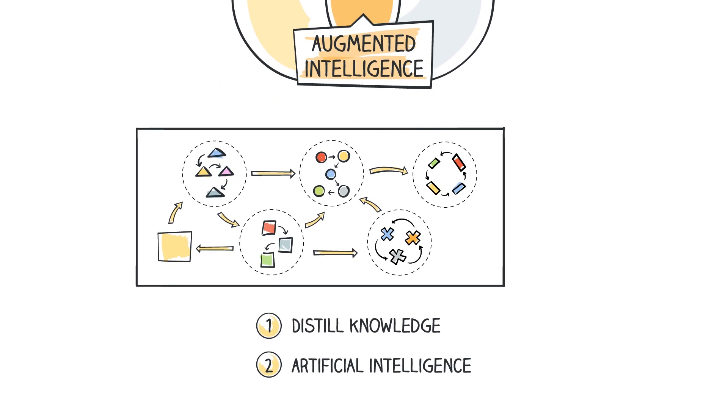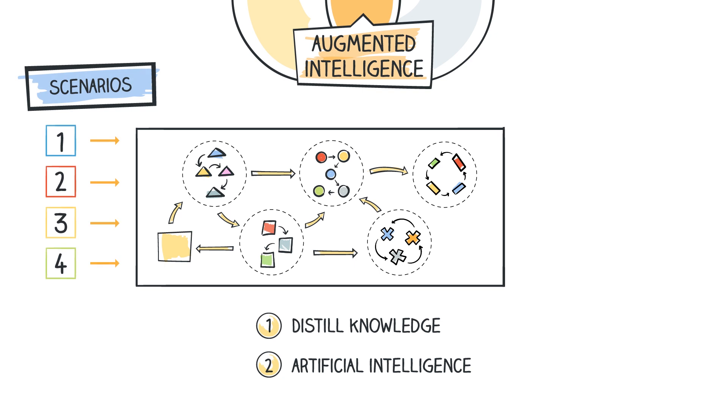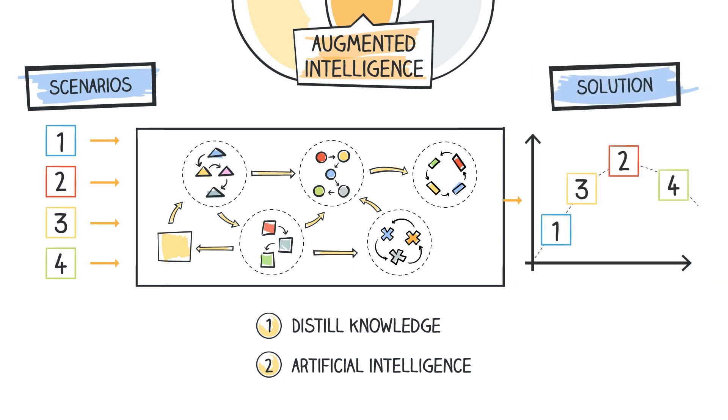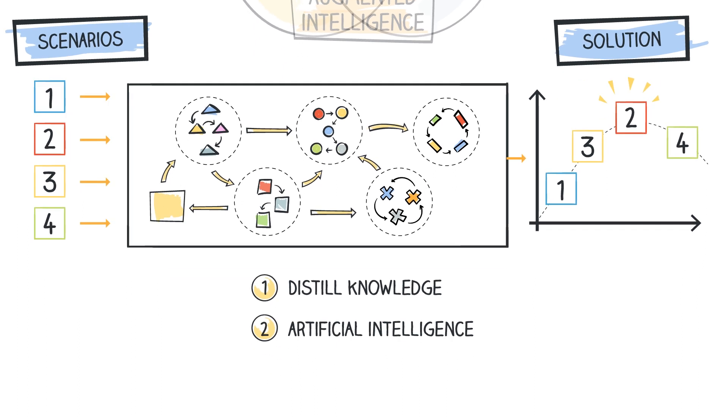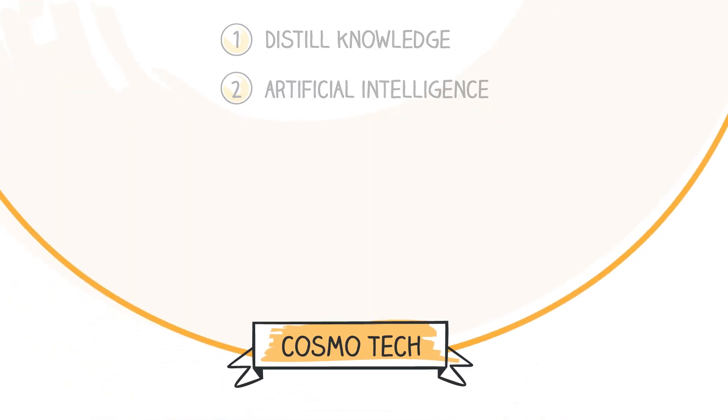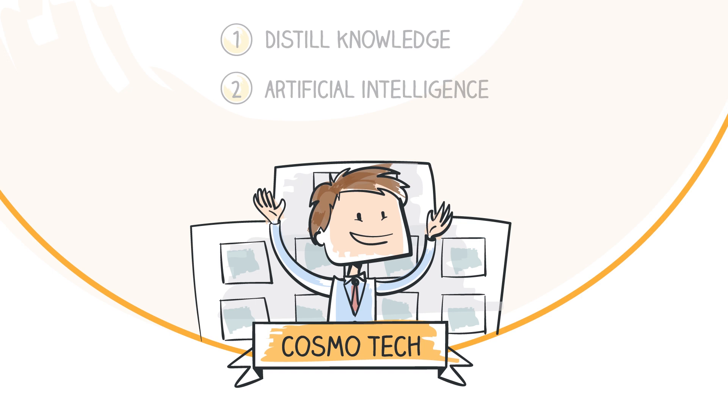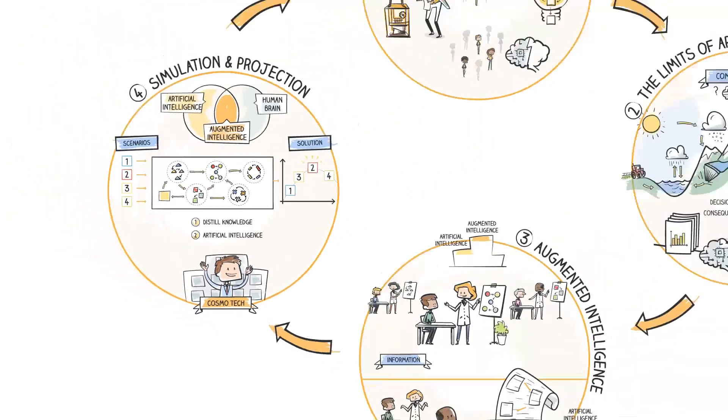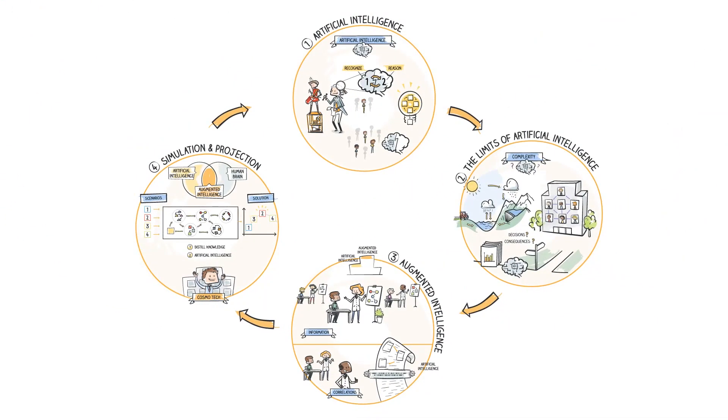The models are then used to simulate a variety of scenarios to determine which one will provide the best solution to a given problem. Our knowledge of modeling and simulation of complex systems forms the cornerstone of the solutions we develop at Cosmotech. Our solutions help our customers to better understand the complexity of their environment so that they can make optimal decisions.